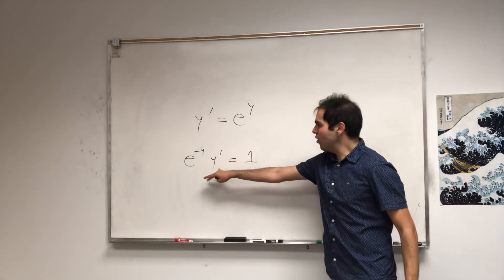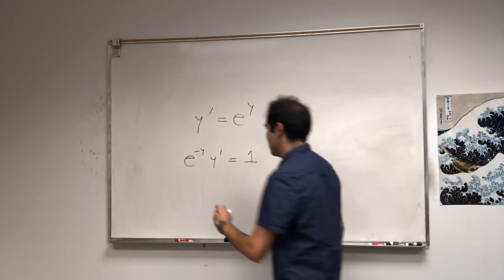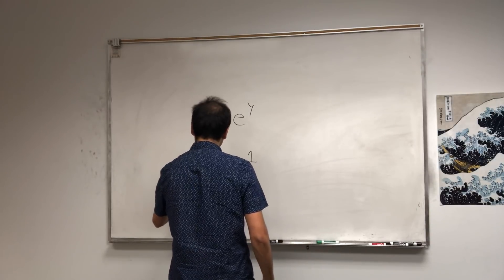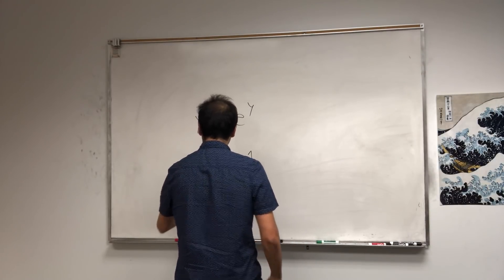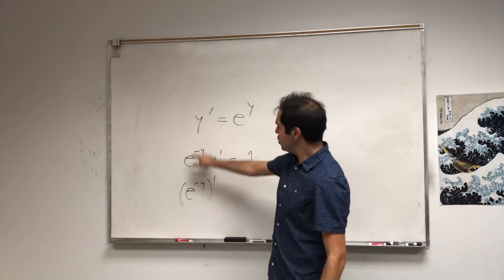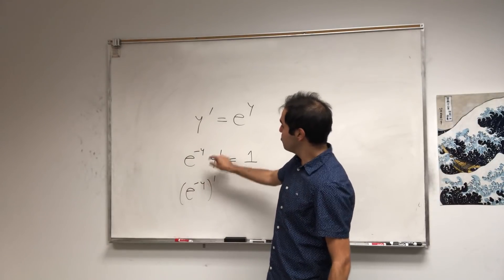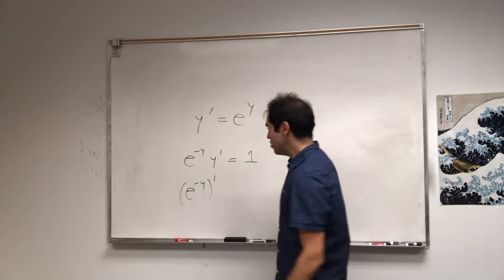And then notice this is almost like a reverse chain rule happening because if you get e to the minus y prime, you get e to the minus y times minus y prime. So to remedy that,